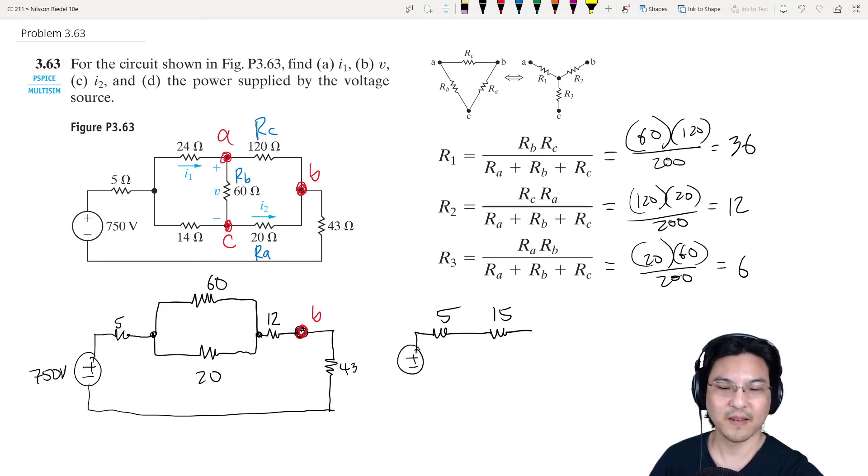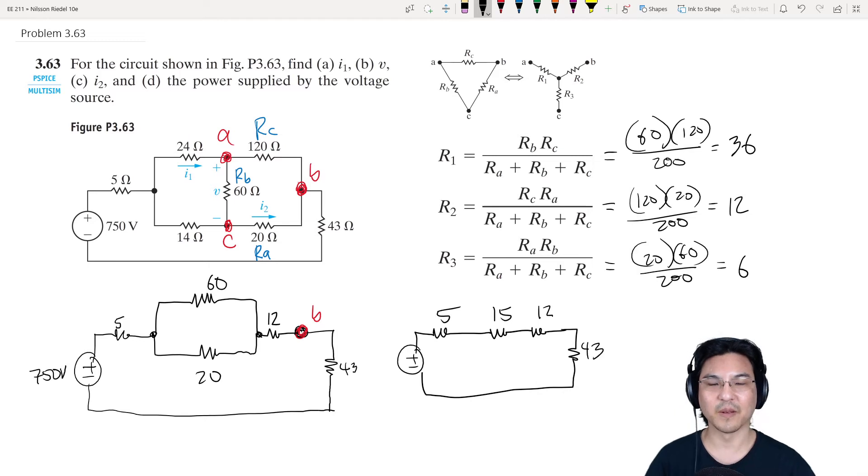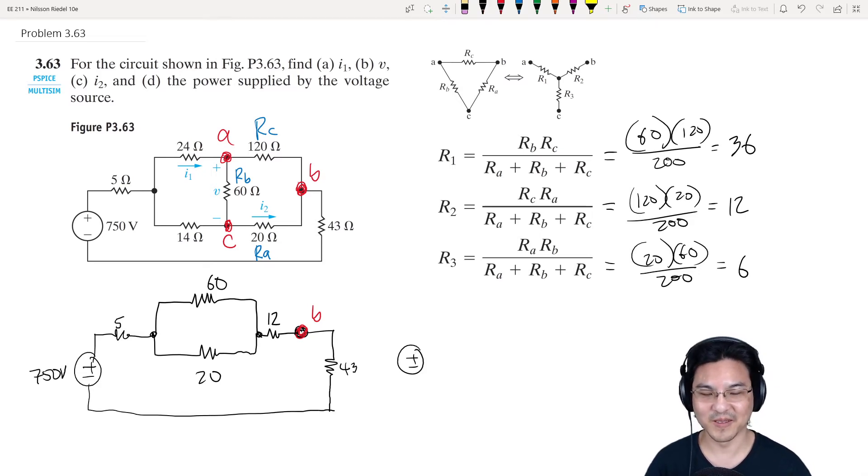And then there's the 12 and then the 43. So then we can combine all four of these in series. So that's 20, 32, 75. So the whole thing combines to be 75. Just to save space, I'm just going to draw it right here. And the voltage source was 750.